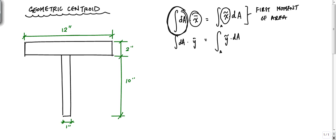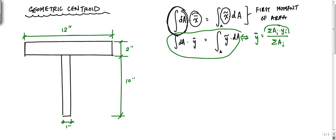You've probably seen this applied especially for shapes you can break up into rectangles: y-bar equals the sum of Ai times Yi divided by the sum of Ai. This is the moments of areas of the individual elements divided by the total area, which gives you the centroid. You can see the analogy between this equation and the integral form.